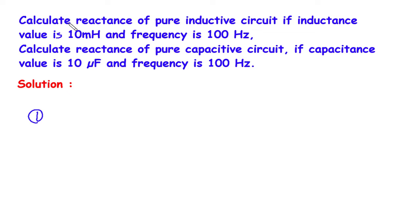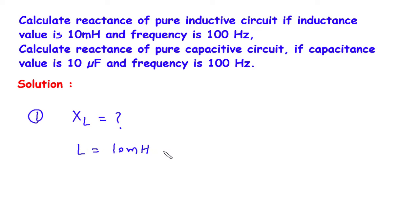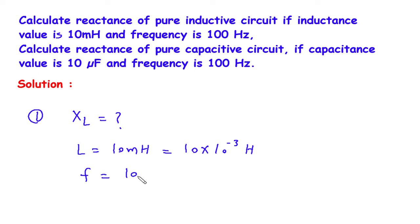First, we have to calculate reactance of the pure inductive circuit, that is we have to find XL. What is given: inductance value L is equal to 10 mH. We can convert this into henry, so this will be 10 multiplied by 10 to the power minus 3 henry. And frequency F is equal to 100 Hz.